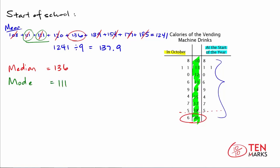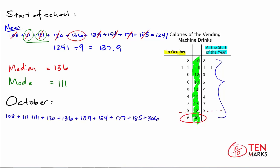Now let's talk about these measures of central tendency for October. We'll begin by finding the mean. All of the data values for October are written out, and we have an extra data point: 306 calories. The total of this data is 1,547. October has one more data point than the start of the year, so we divide 1,547 by 10. That gives a mean of 154.7 calories.